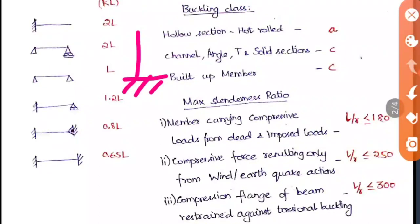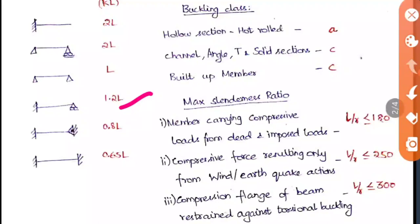For end conditions: one end fixed and other end free gives K = 2 (effective length 2L); one end pinned and other end pinned/hinged/roller also gives 2L; both ends pinned gives L; one end fixed and other end roller gives 1.2L; one end fixed and other end hinged gives 0.8L; both ends fixed gives 0.65L, whereas in beam theory it is 0.5L.